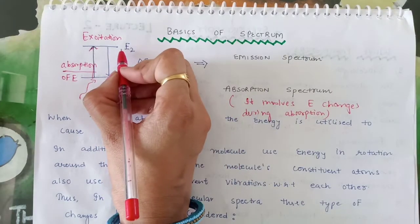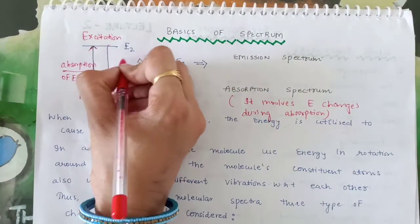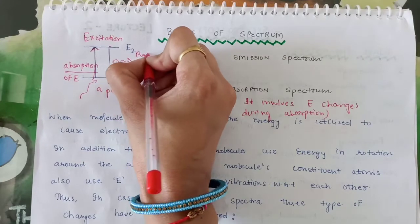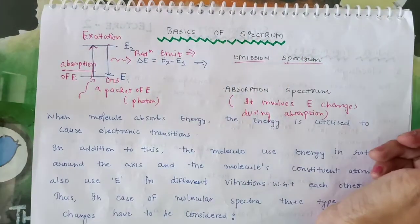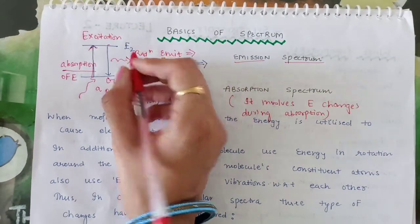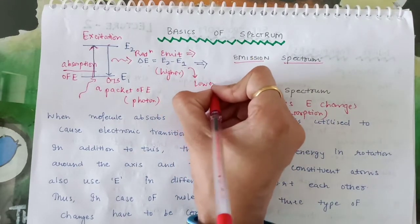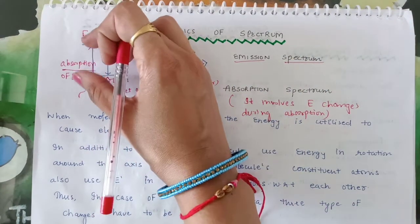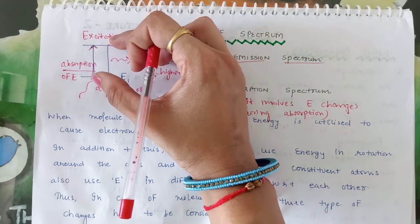Similarly, after going to the higher state, the electrons return to their ground state. When they return to the ground state, they emit a particular wavelength of electromagnetic radiation. The spectra obtained from this emission comes under the emission spectrum. The energy difference between the two states is E2 minus E1, where E2 represents the energy of the higher state and E1 represents the energy of the lower state. So we can get spectra from both absorption and emission phenomena.